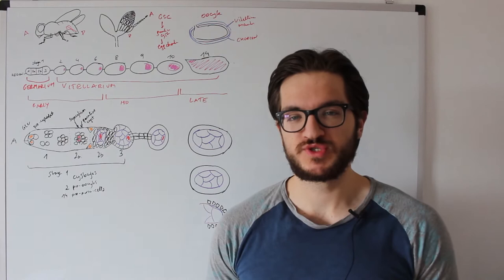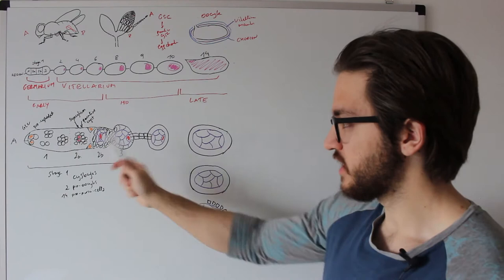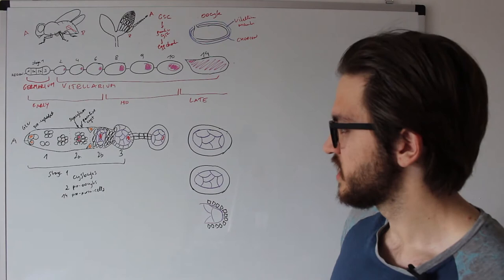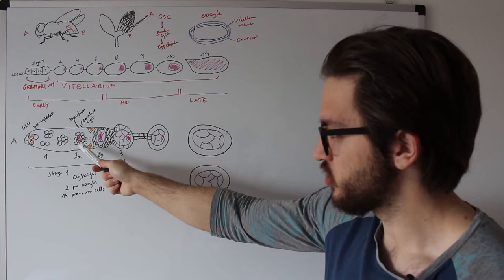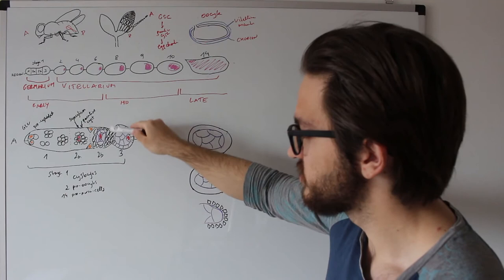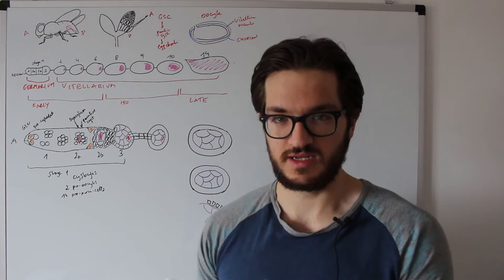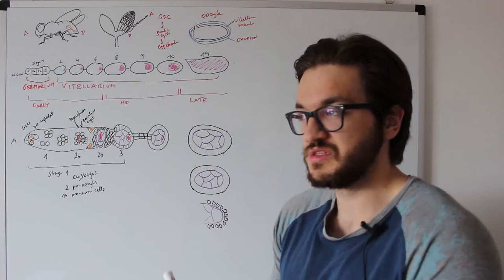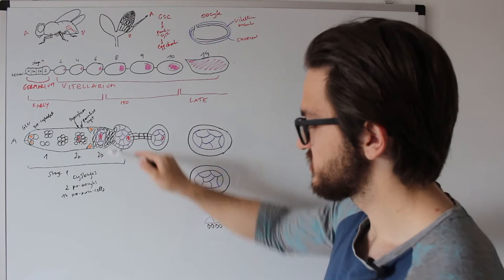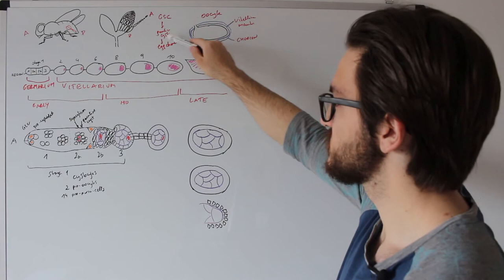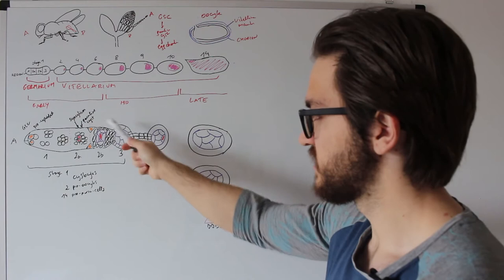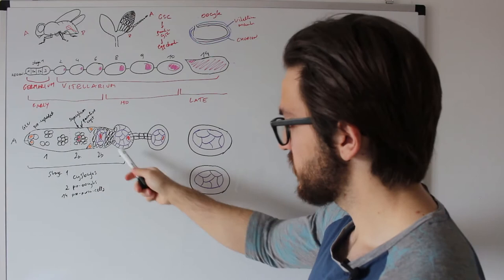Within region 2b, the oocyte is selected. Other things also occur: the germline cyst changes shape. In region 2a the germline cyst looks like an aggregate of cells, but in region 2b it is disc-shaped because it is now encapsulated by other cells. This encapsulation exerts a force on the germline cyst that leads to a disc-shaped germline cyst. Beginning with region 3, we first call this aggregate an egg chamber. The germline cyst is encapsulated by these cells and is then called the egg chamber.